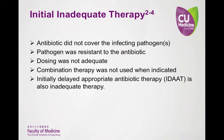Initial inadequate therapy can occur due to several causes, including not covering the infecting pathogen, if the pathogen is resistant to the selected agent, if the wrong dose was used, or if combination therapy was not used when it should have been. Inadequate initial therapy has strong data showing it leads to a dramatic increase in mortality, particularly in high-risk patients.